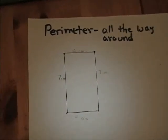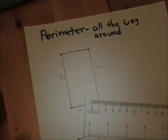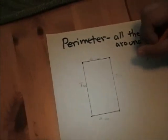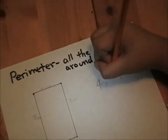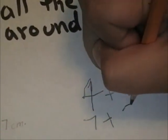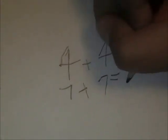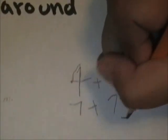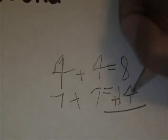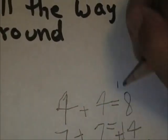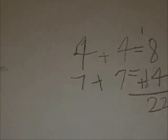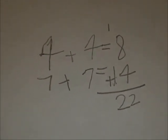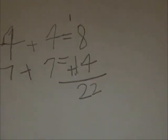If you only add two sides, you will get a wrong answer. Now, let's go ahead and add up those sides. The two widths are four centimeters. Four plus four is eight, and the two lengths are seven centimeters. Seven plus seven is fourteen. Eight plus fourteen is twenty-two.